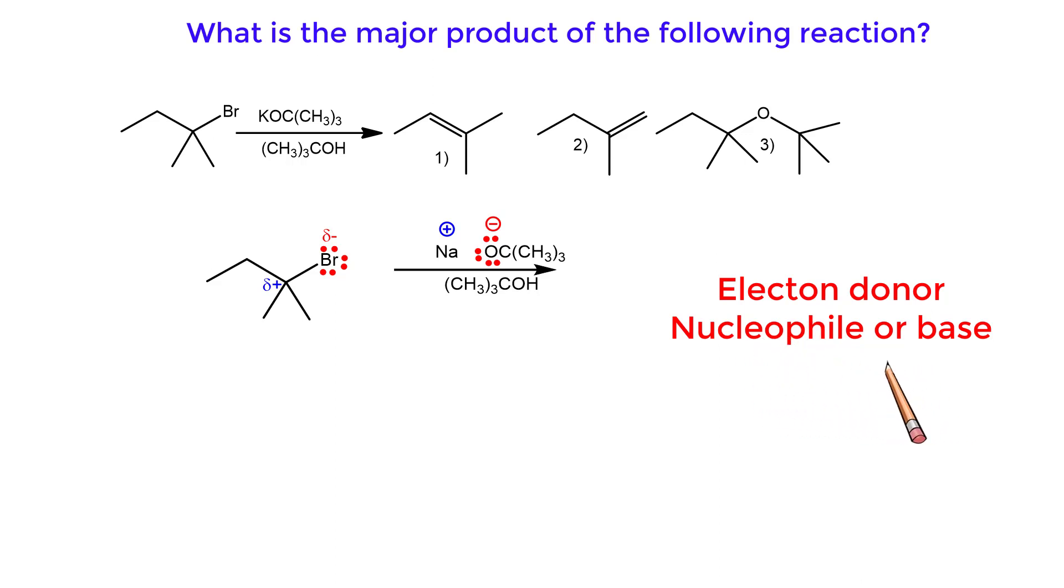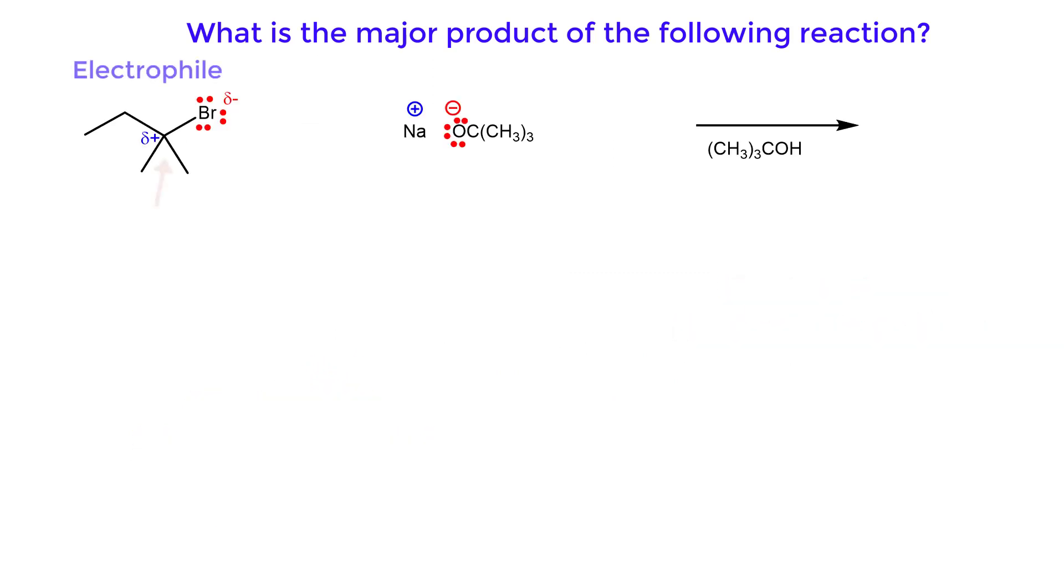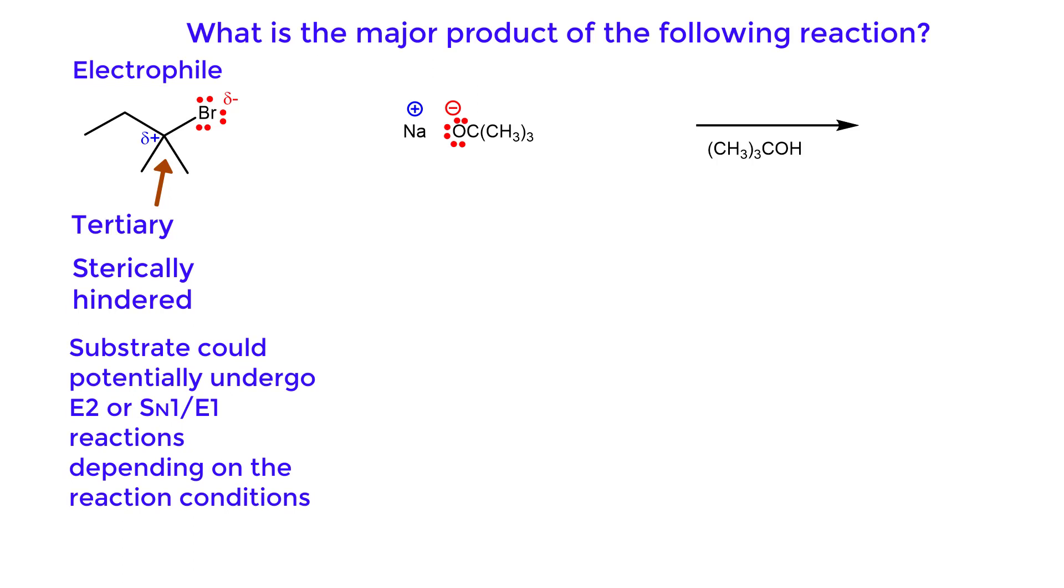The alkyl halide is the electrophile or electron acceptor. The electrophilic carbon is tertiary and is sterically hindered. The substrate could potentially undergo E2 or SN1/E1 reactions depending on the reaction conditions.